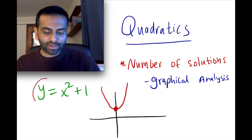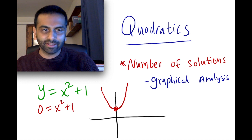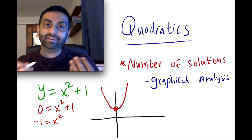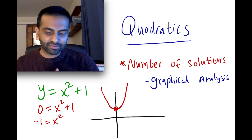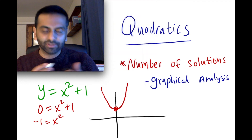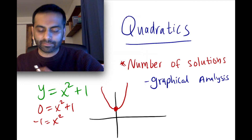Notice if you were to actually try to solve algebraically: you just have 0 equals x squared plus 1. You subtract 1 from both sides: negative 1 equals x squared. And you can see that won't work because you can't take the square root of a negative number. So that's why you run into a wall algebraically as well.